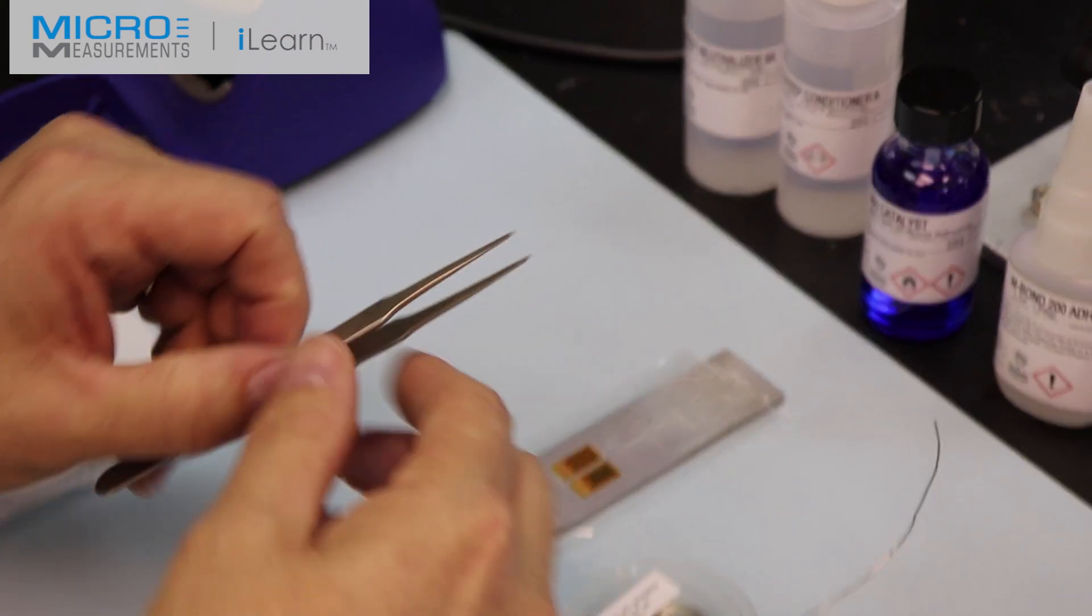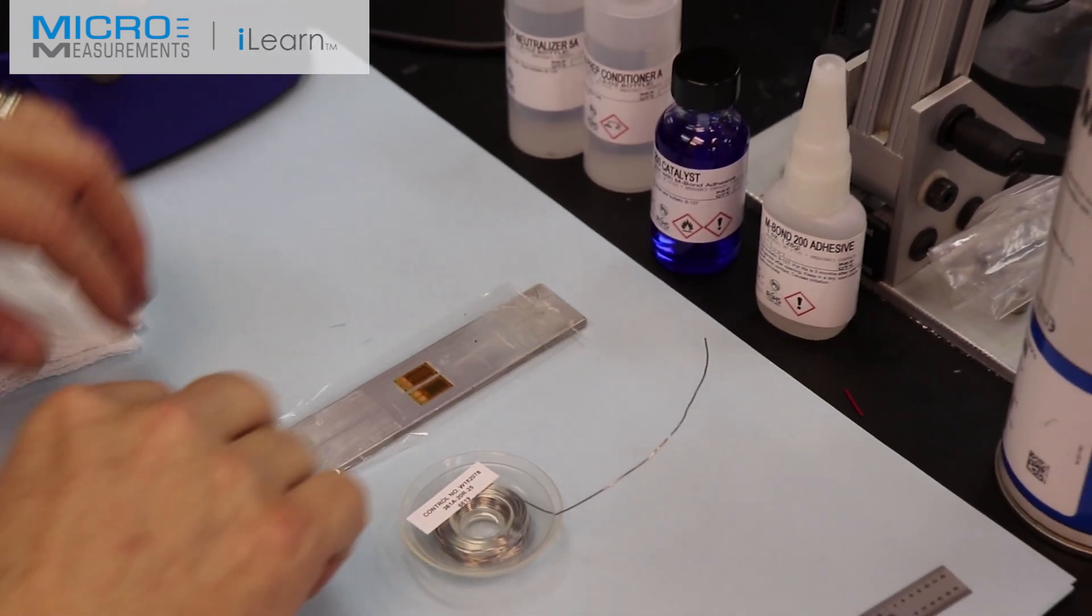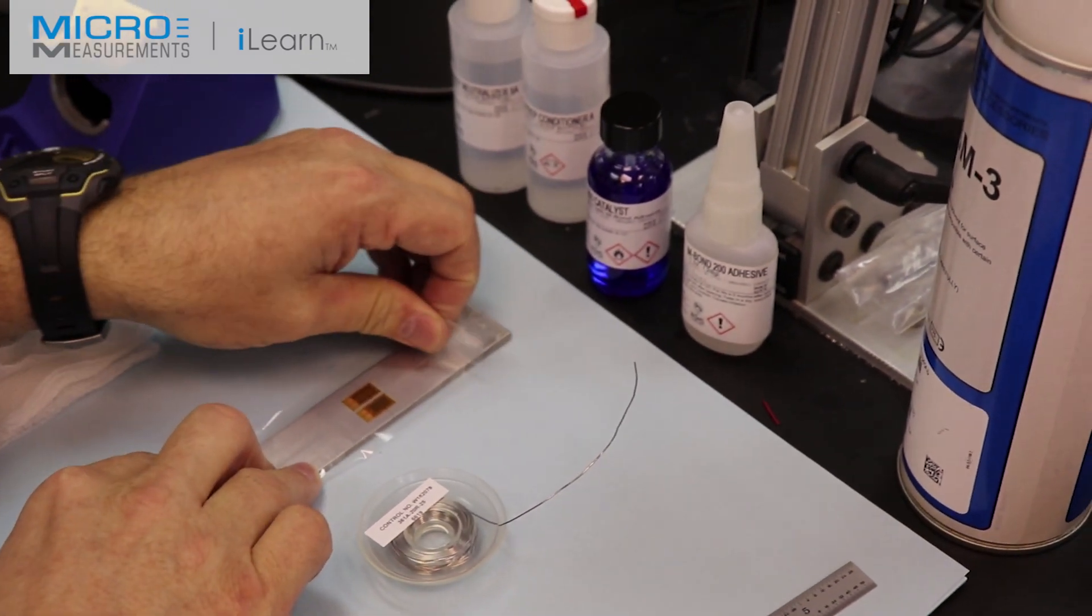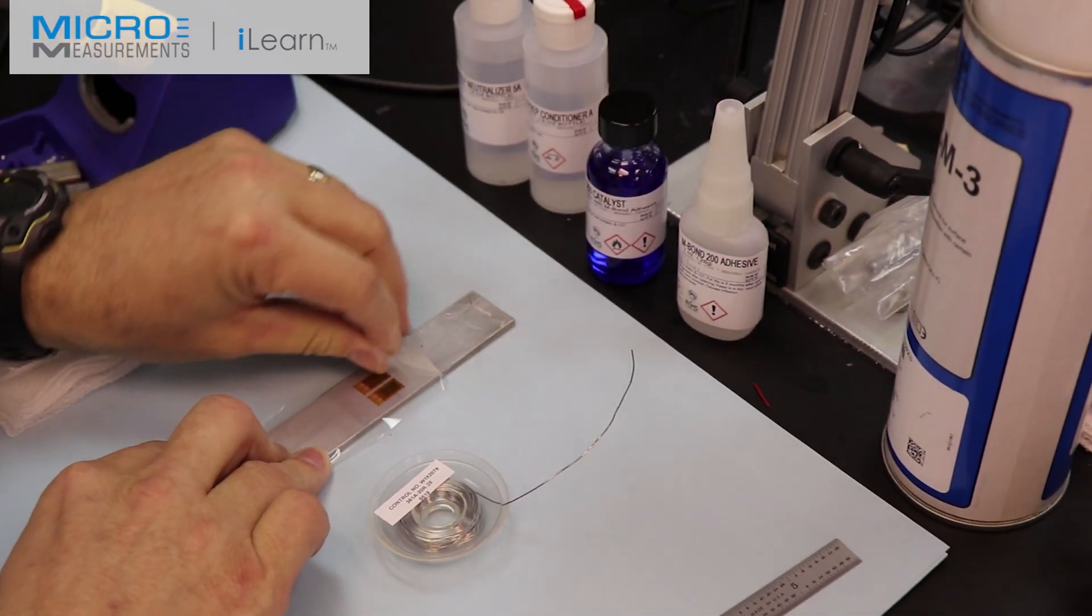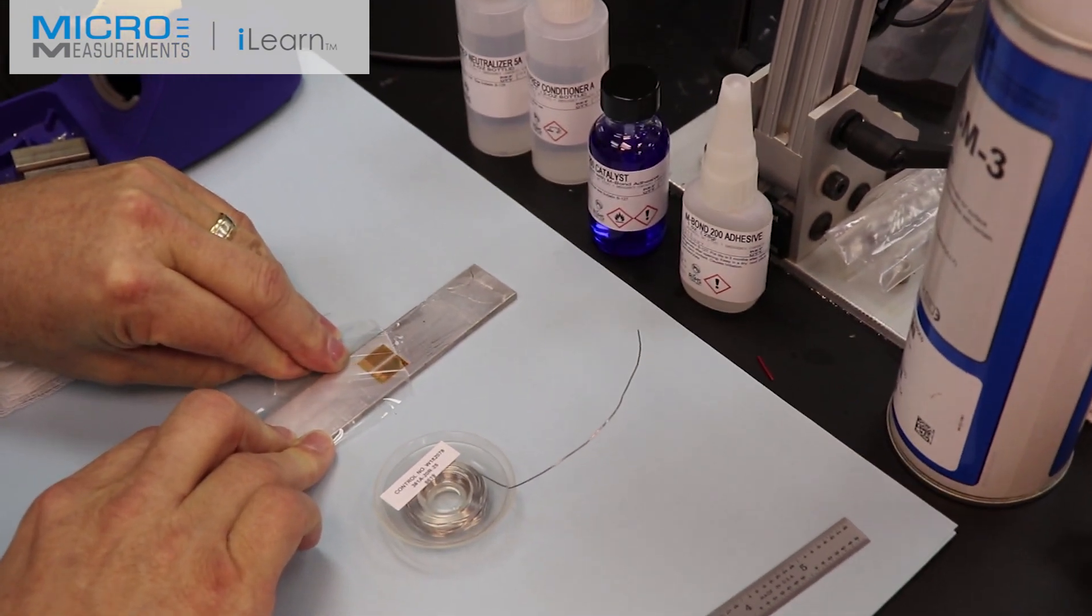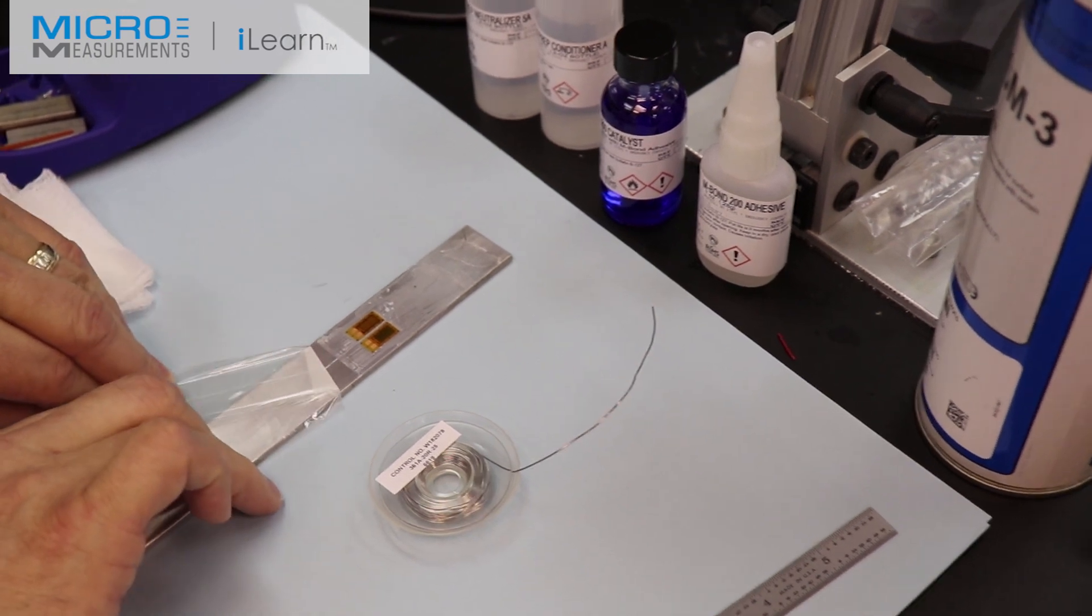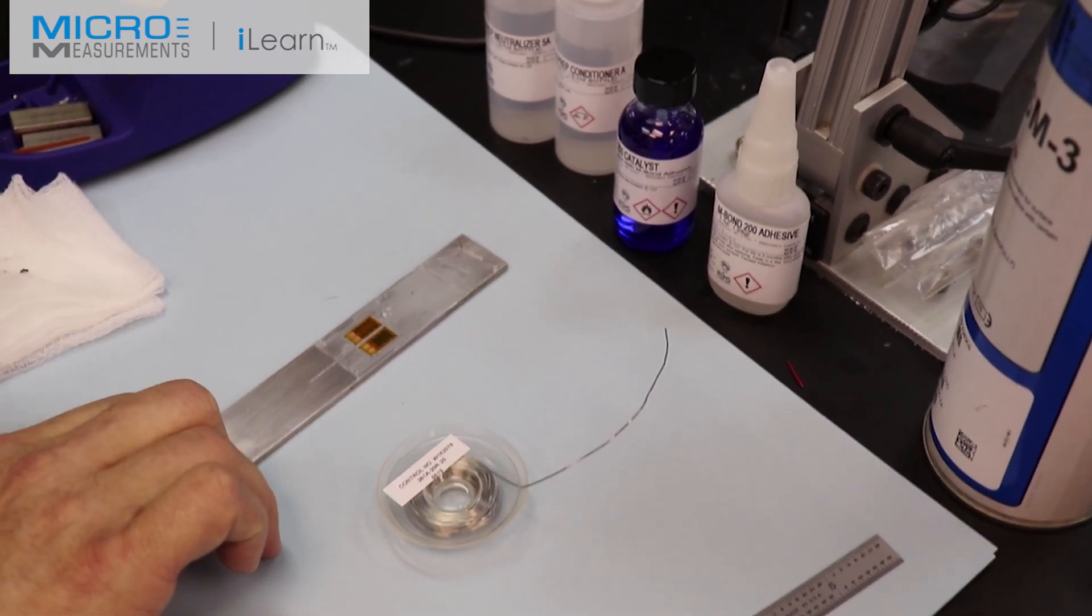So we're ready to go ahead and remove this tape and tin the tabs of the strain gauge. So what I'm going to do is lift the tape and I'm going to pull it directly back on itself like this. I'm trying to minimize the amount of force pulling on top of the strain gauge. And once you get past the gauge, you can go ahead and take it off.